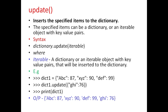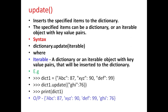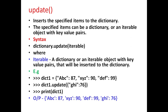Next is update. This method inserts the specified items into the dictionary. The specified item can be a dictionary or an iterable object with key-value pairs. The general syntax is dictionary.update with iterable, where iterable is a dictionary or an iterable object with key-value pairs that will be inserted into the dictionary. For example, if dictionary dict1 is defined with these elements and if we give the command dict1.update({'ghi': 76}), when we print the dictionary it will display the output where 'ghi' and 76 is inserted as a key-value pair.